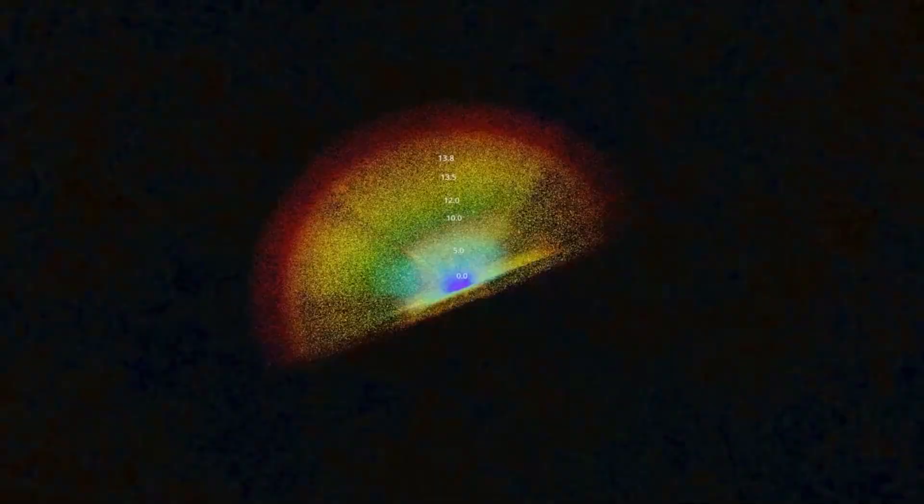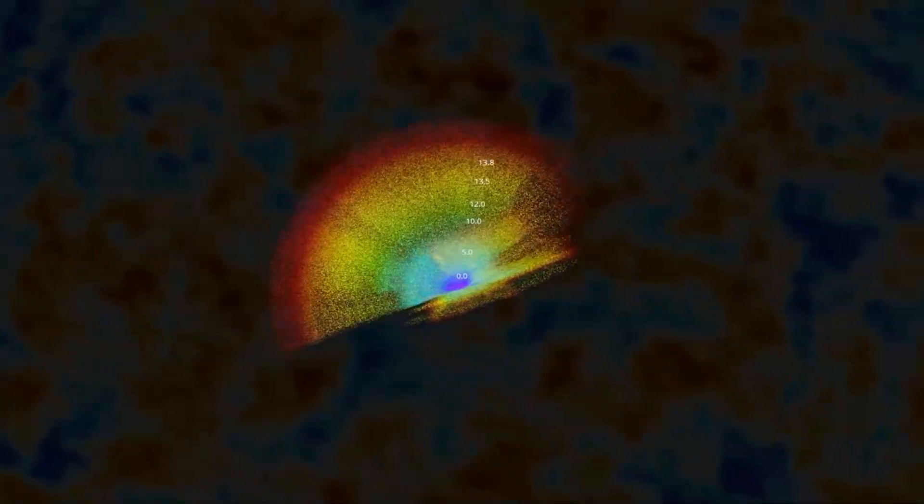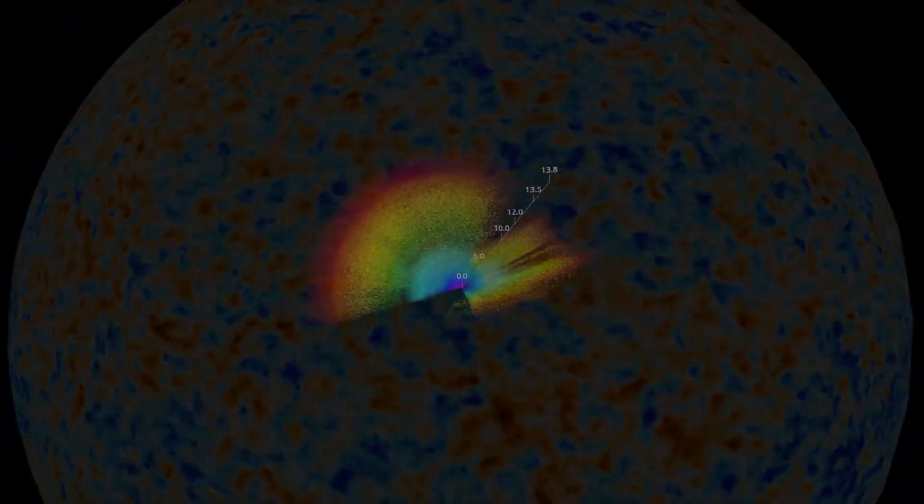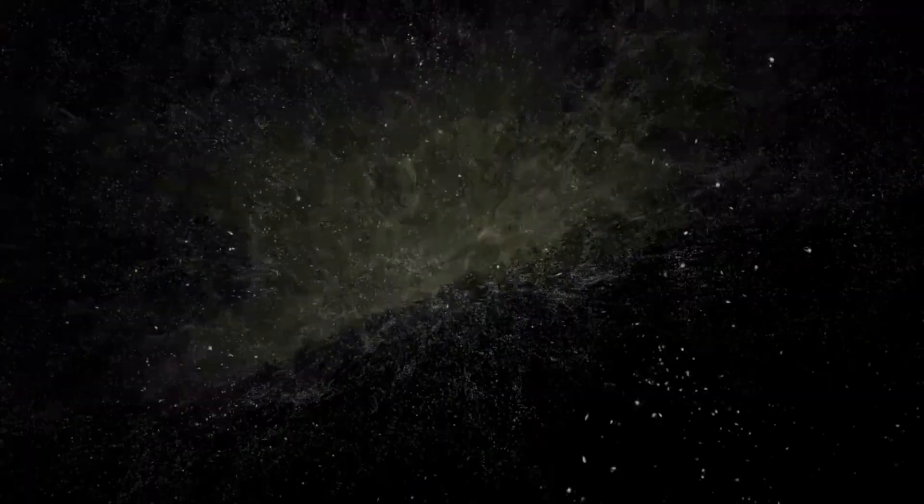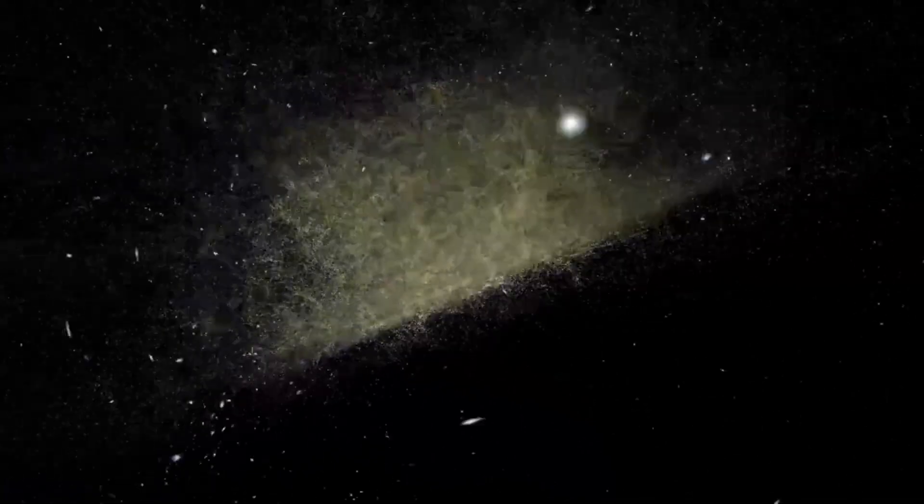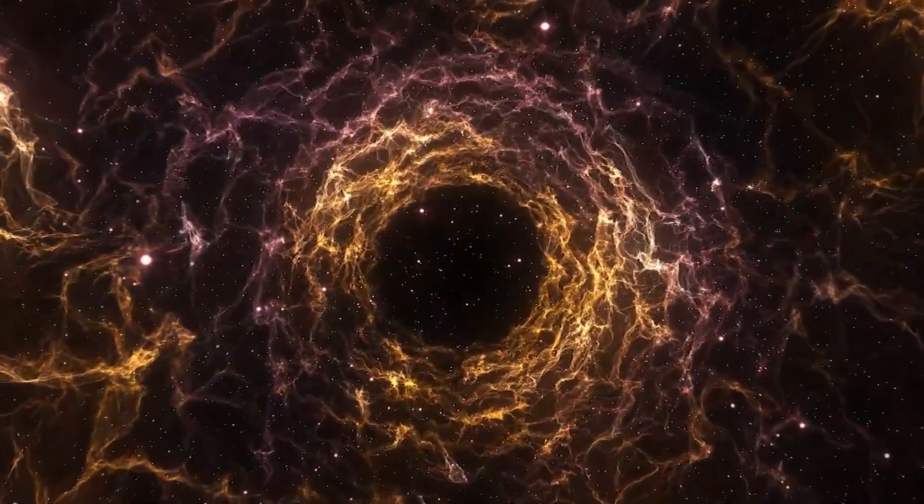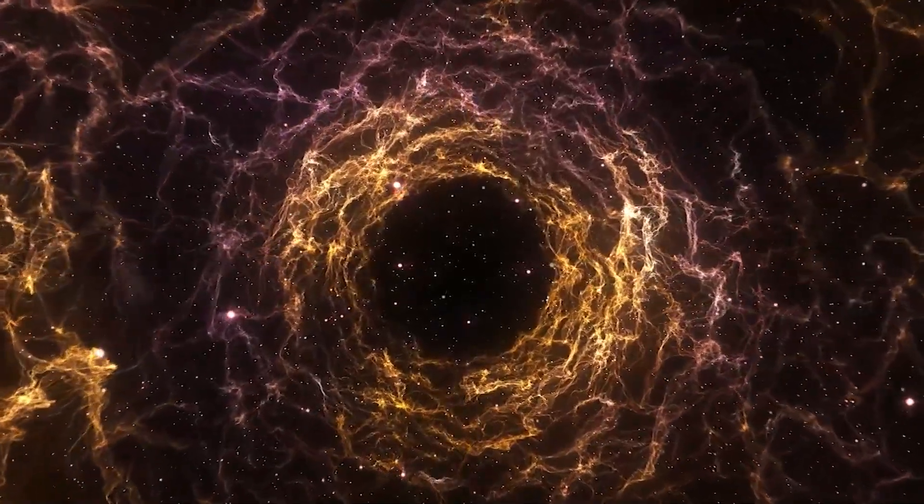Kirchner and his team developed a 3D model of the universe using this, and something strange was discovered as the map developed. There was an emptiness 700 million light-years away from Earth. The Milky Way could fit inside it a billion times.